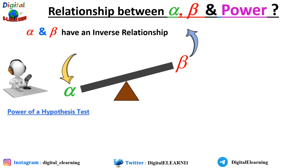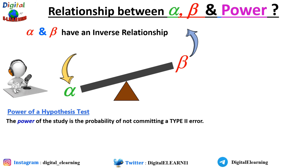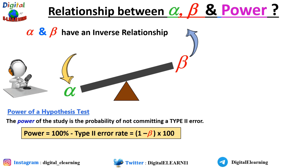Now let us look at what power is. The power of a hypothesis test is the probability of not committing a type 2 error, or beta error. In other words, it is the probability that the test will correctly support the alternative hypothesis. Power is calculated as 100 percent minus type 2 error, that is beta, or 1 minus beta, multiplied by 100.